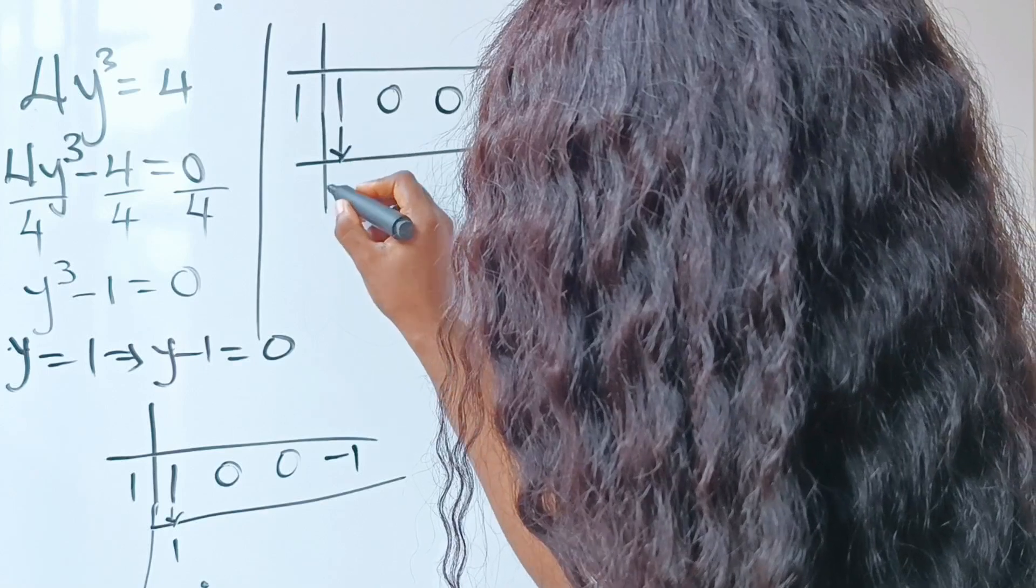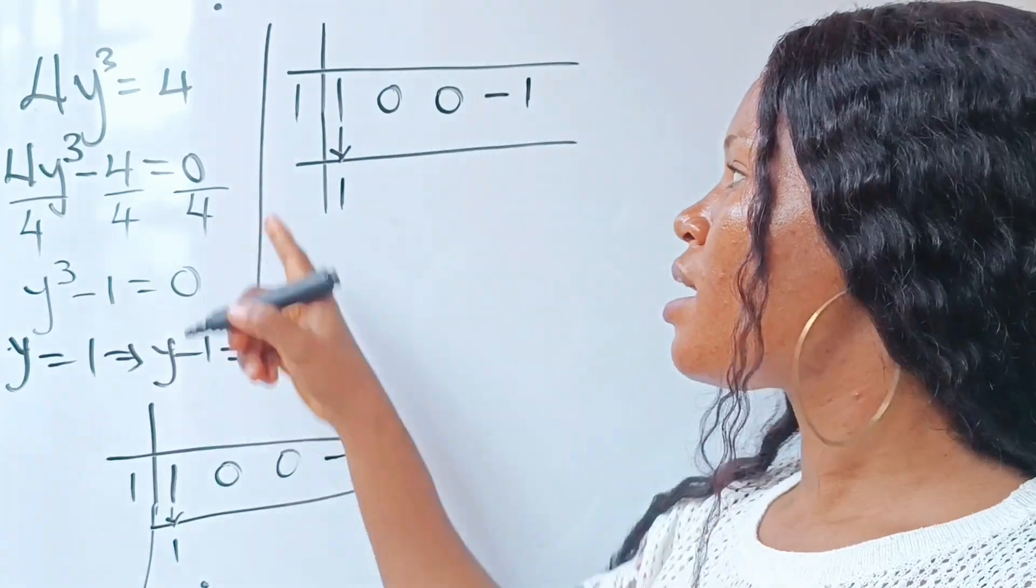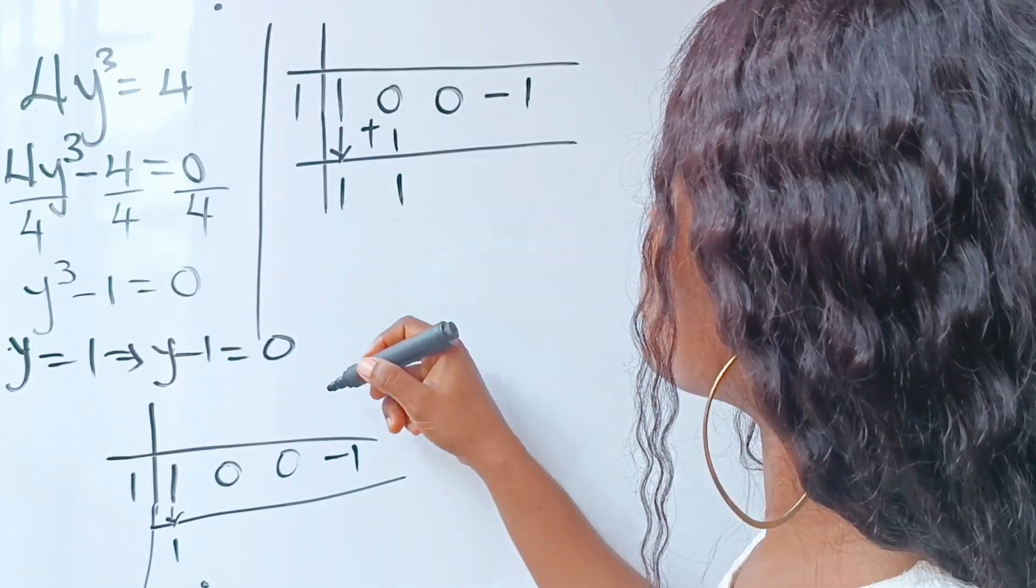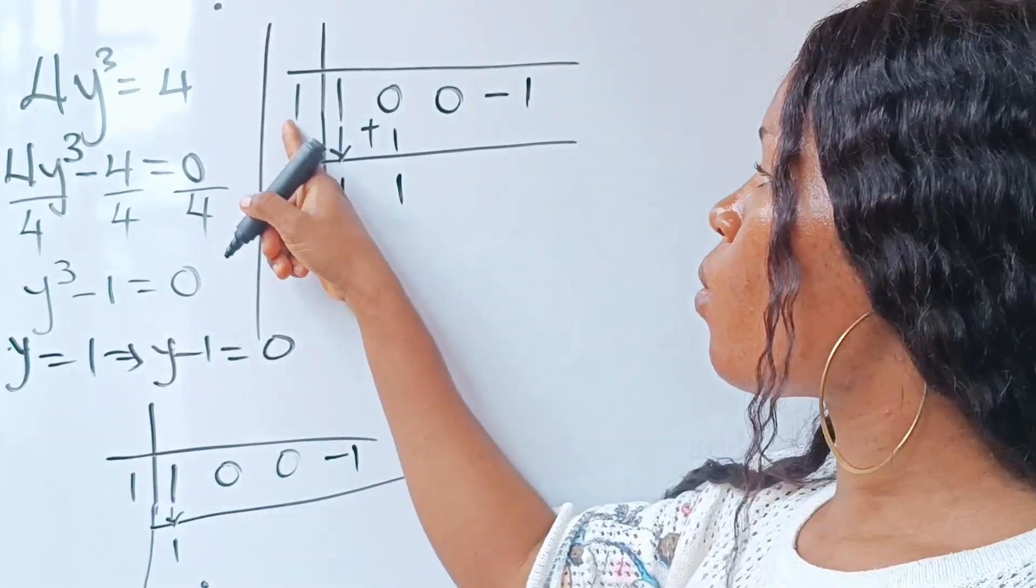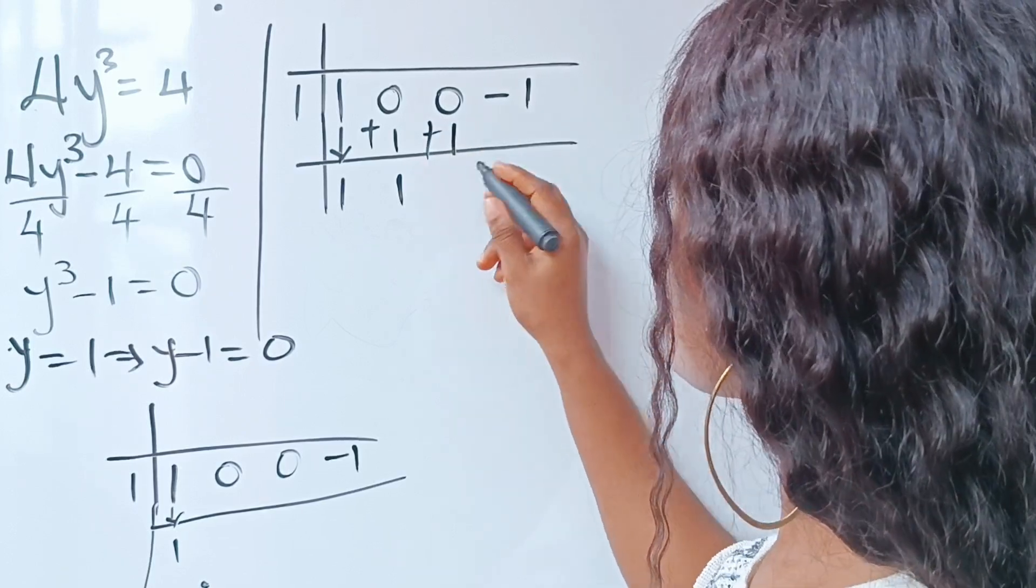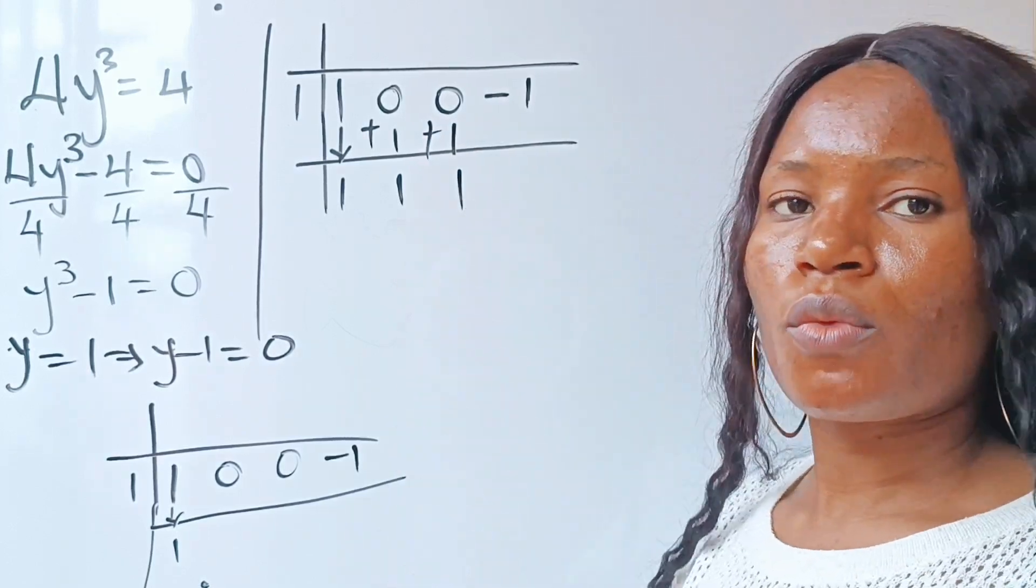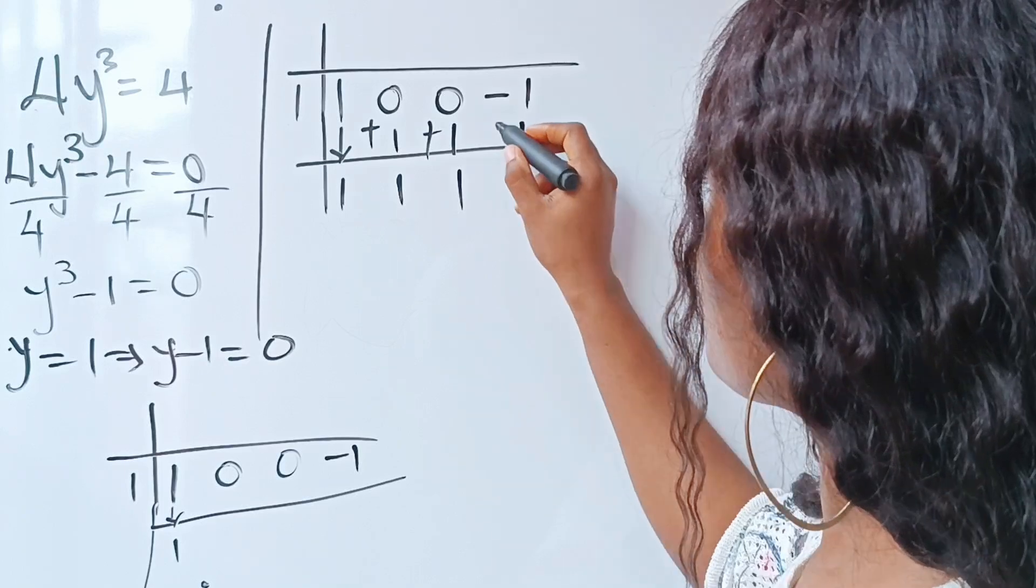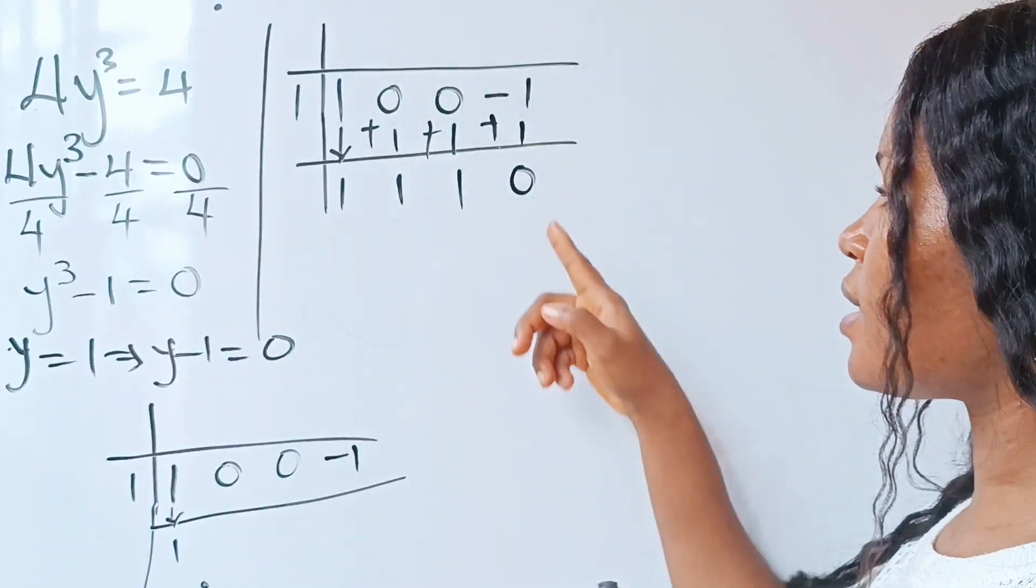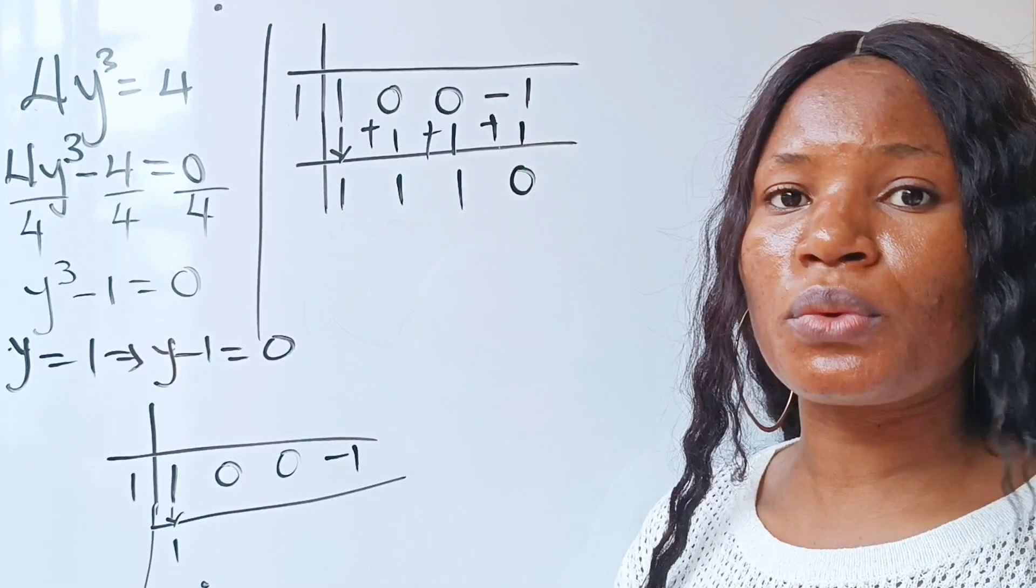First of all, we're going to bring down this 1. Now 1 × 1 gives us 1, and we add 0 + 1 = 1. We multiply again, 1 × 1 = 1, and -1 + 1 = 0. So once you're able to get this, that means that 1 is a root.